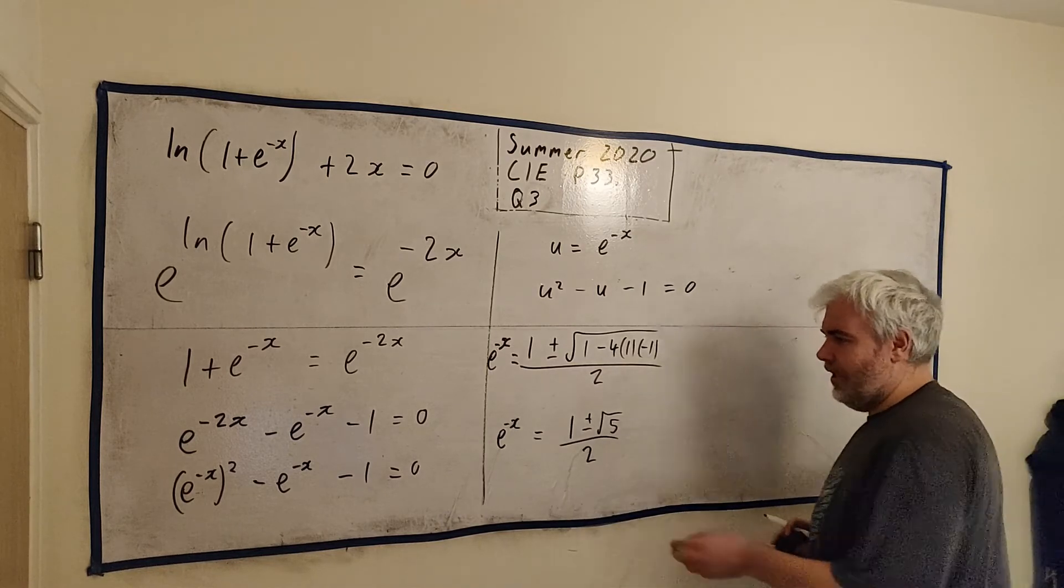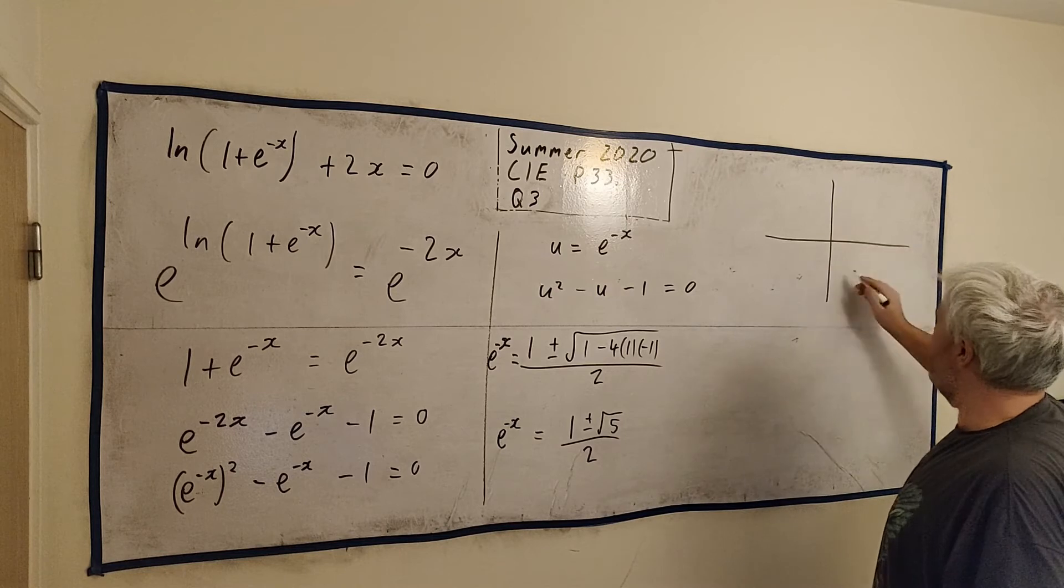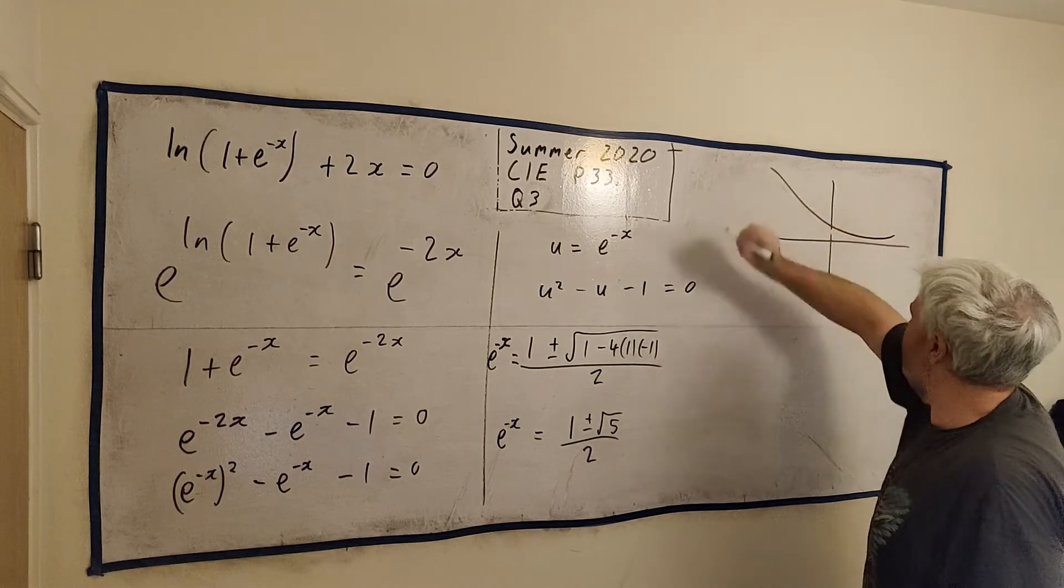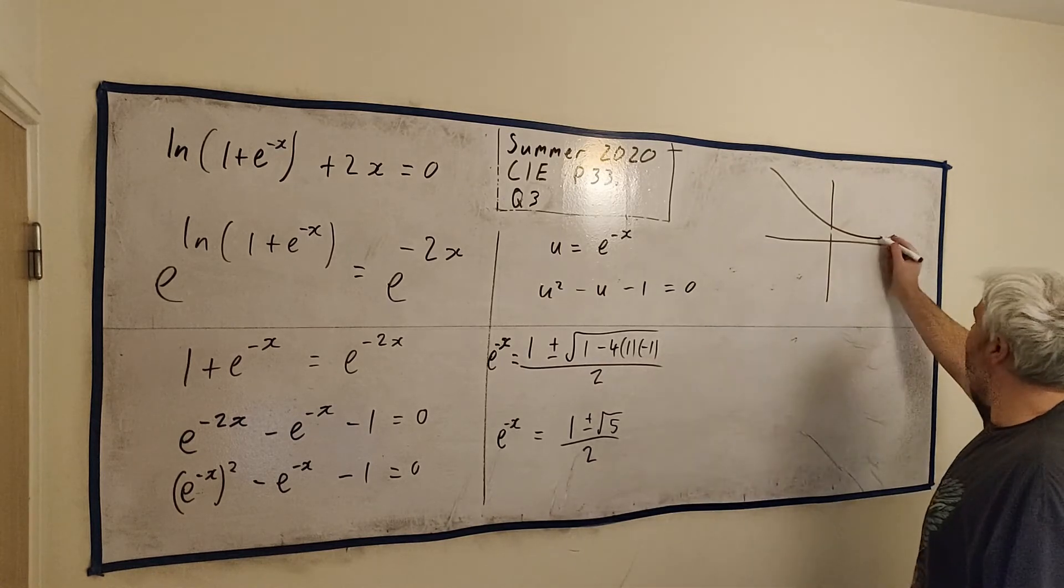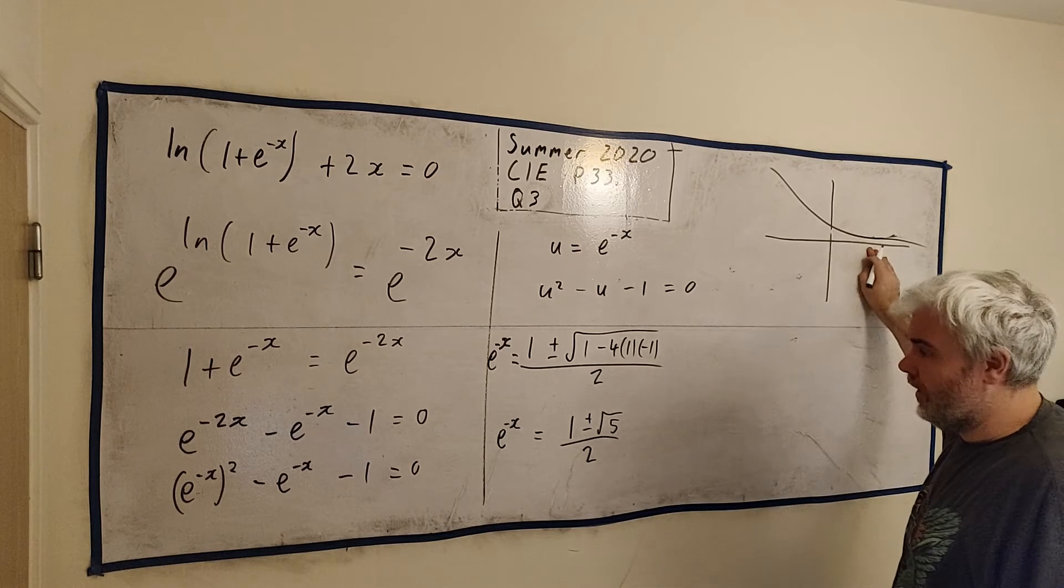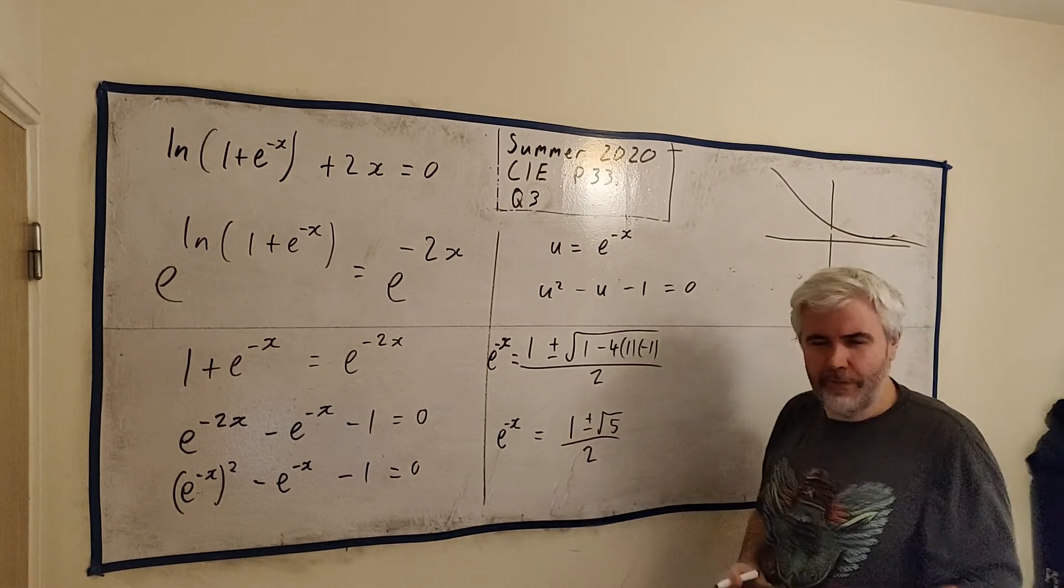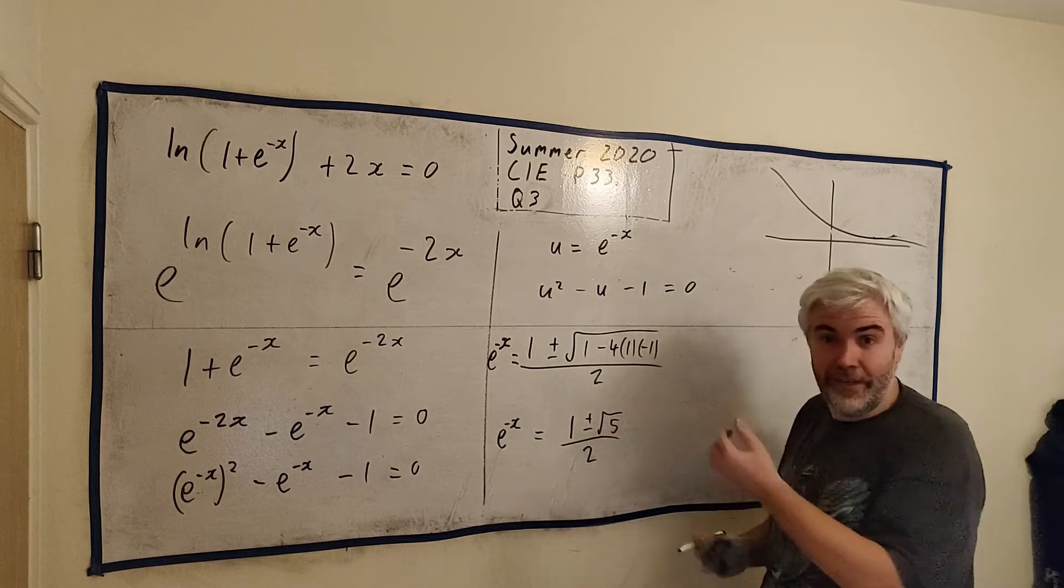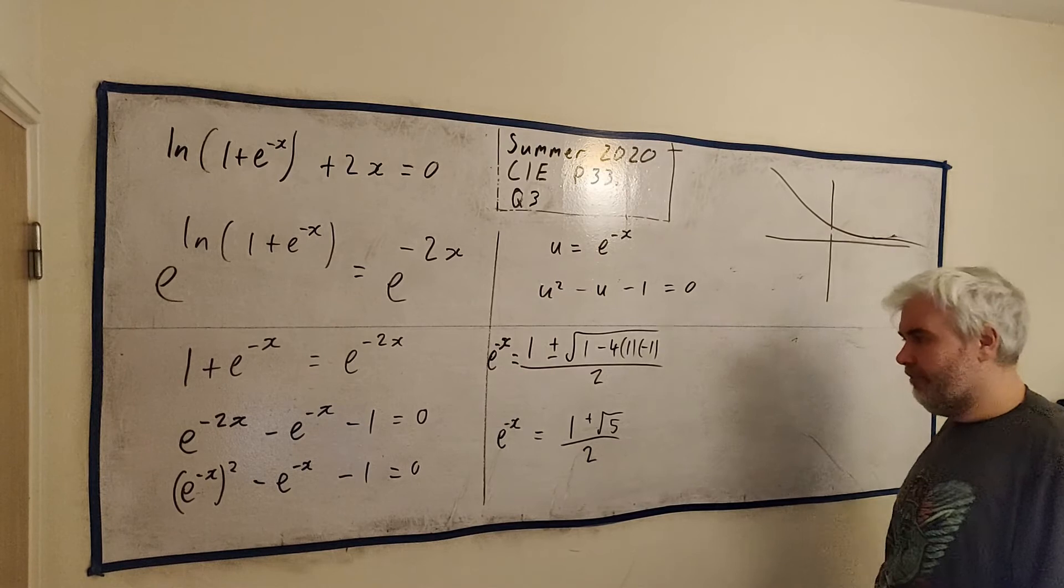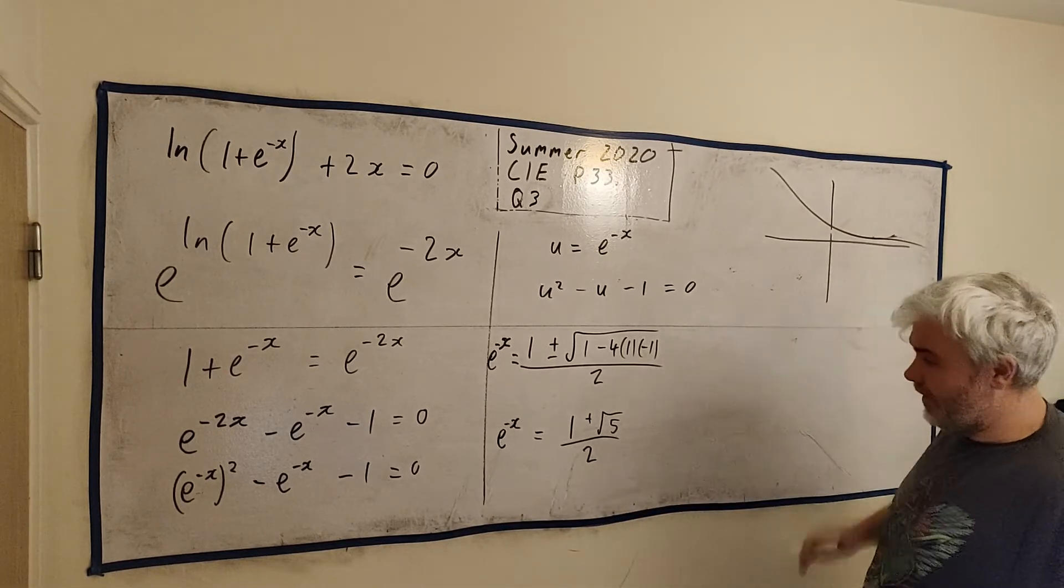Now I can already say something here. e to the power of minus x will look something like this. e looks like this usually, but minus x would just make it invert it through the y-axis like that. It's never below 0. It's never less than 0. So 1 minus square root of 5 can't work, because 1 minus square root of 5 is less than 0. So you can go ahead and rub that one out. Or write it again. That's your one and only answer to this, because you can't get less than 0.